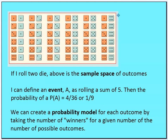We can define event A as rolling a sum of five. In that case, we have four possible outcomes: one and four, four and three, three and two, and two and three. So the probability of event A, which is rolling a sum of five between two dice, is four out of 36 or one ninth.